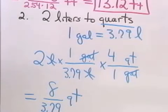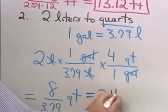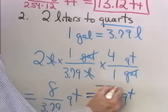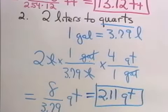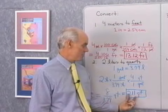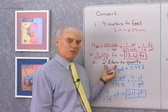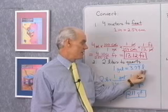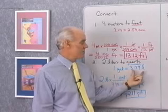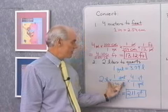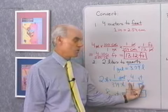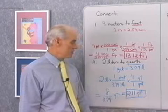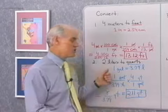That comes out to be 2.11 quarts to the nearest hundredth. So 8 divided by 3.79 comes out to 2.11 quarts. I started with liters, wanted to end up with quarts, used the conversion factor between gallons and liters — gallons in the U.S. system, liters in the metric system — went right to gallons, then multiplied to get quarts. The result is 2.11 quarts in 2 liters.